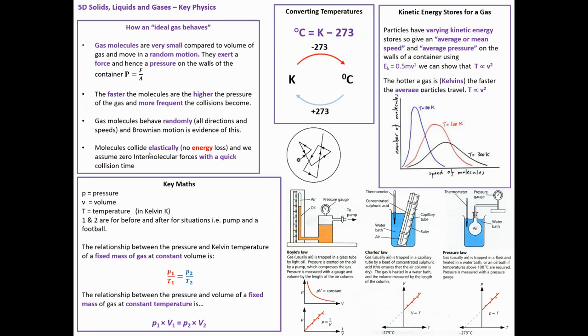Also, the molecules collide elastically. It's not quite perfect, but we assume no energy loss and that intermolecular forces are pretty much zero with very fast collision time. Those are the assumptions of how it happens. We've got to be able to convert between degrees C and Kelvin. The Kelvin temperature minus 273 gives you degrees C. You can see my little picture here to show you how to work it out.